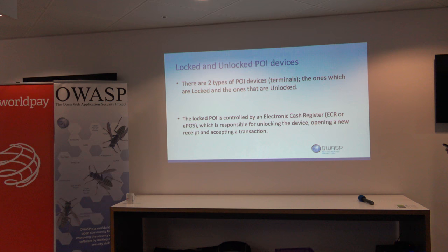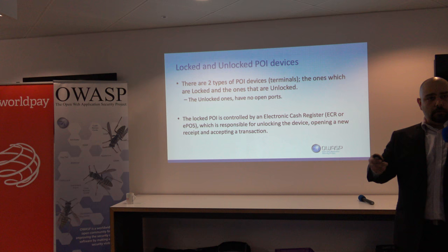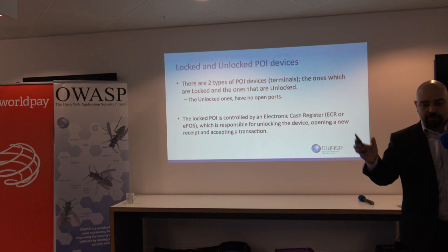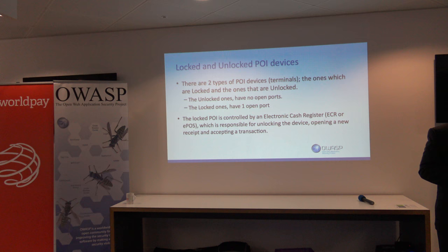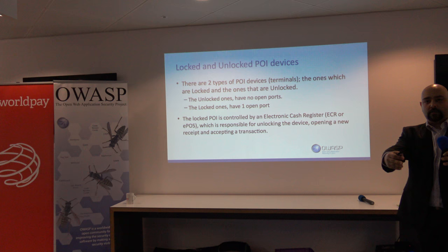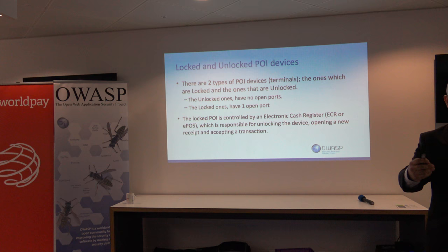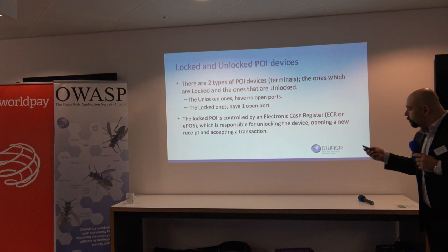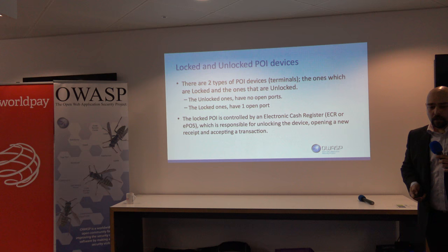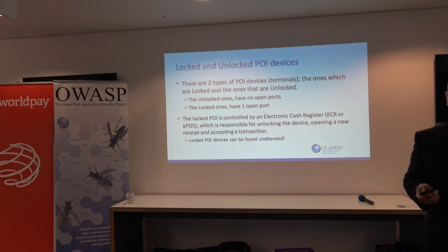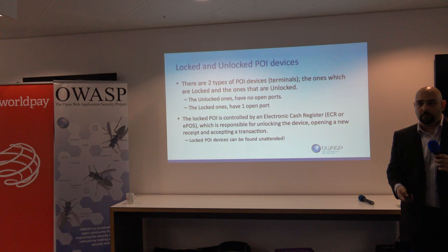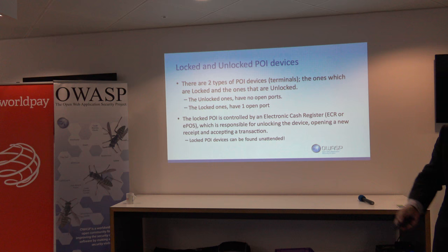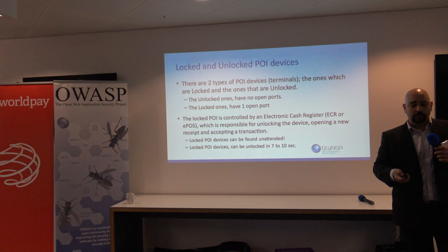The unlocked ones have no open communication ports — they are standalone. The locked ones do have one open port. Those are the devices where a till communicates via cable with the device, and the cashier types in the amount, then the device unlocks and expects you to put your card in to pay. The locked POI device is controlled by the electronic cash register, or EPOS, which is responsible for unlocking the device, opening a new receipt, and accepting a transaction. The truth is you can find locked POI devices unattended almost everywhere, and those locked POIs can be unlocked within a few seconds.